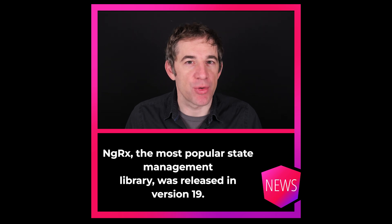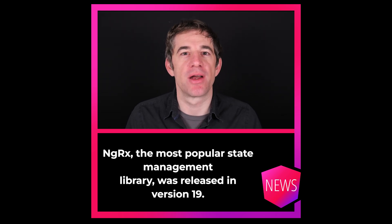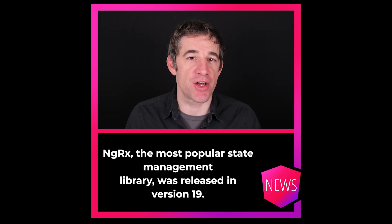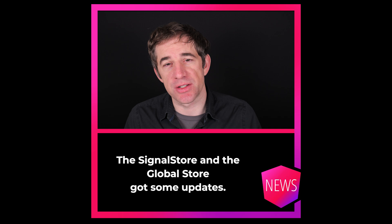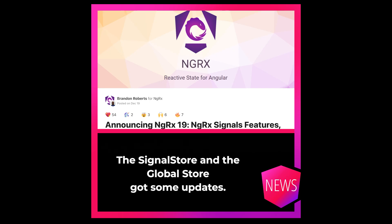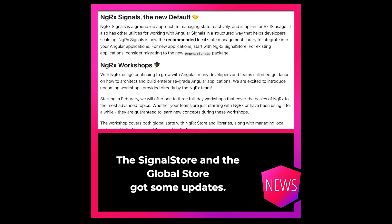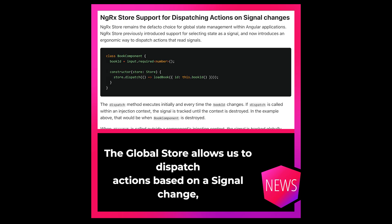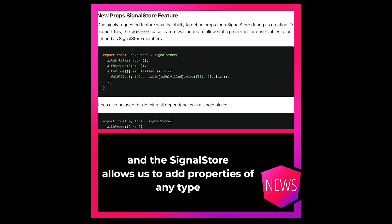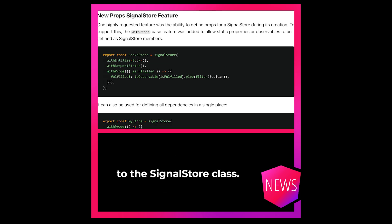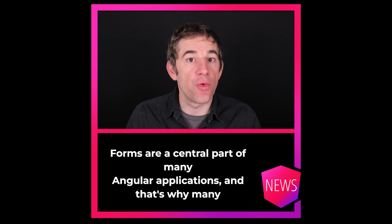NgRx, the most popular state management library, was released in version 19. The Signal Store and the Global Store got some updates. The Global Store allows us to dispatch actions based on a signal change, and the Signal Store allows us to add properties of any type to the Signal Store class.